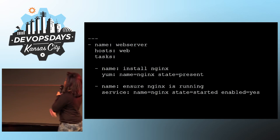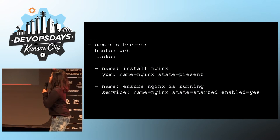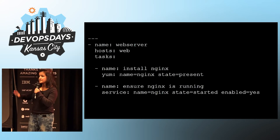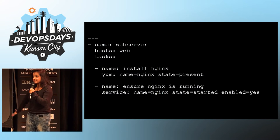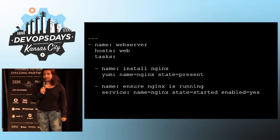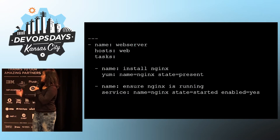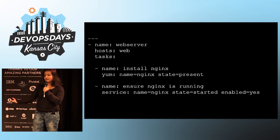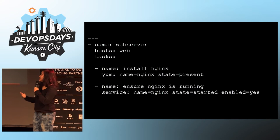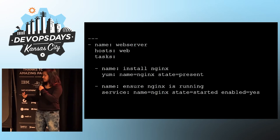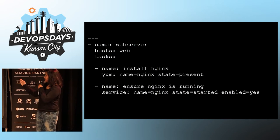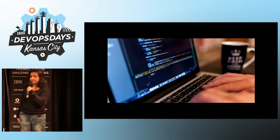Here's an example of an Ansible script — it's a playbook titled 'web server'. It connects to a bunch of hosts defined in a separate inventory file, which is a basic text file, and the hosts are under the category 'web' in that file. The first task is named 'install nginx' and it uses the yum module to make sure a package named nginx is present. The second task is 'ensure nginx is running', and it uses the service module to make sure nginx has started and that it's enabled.